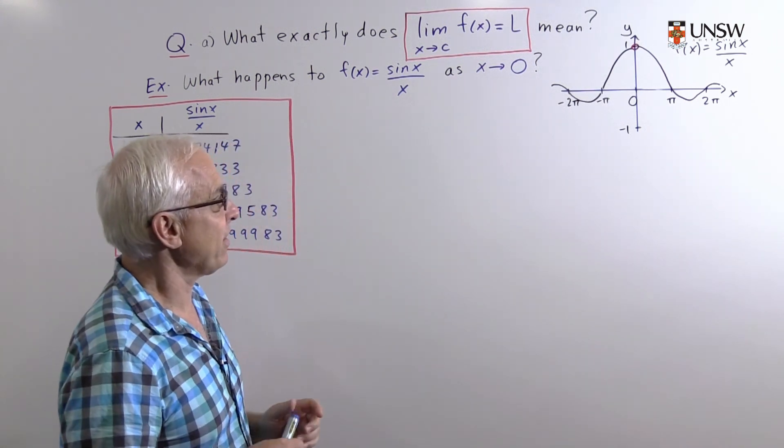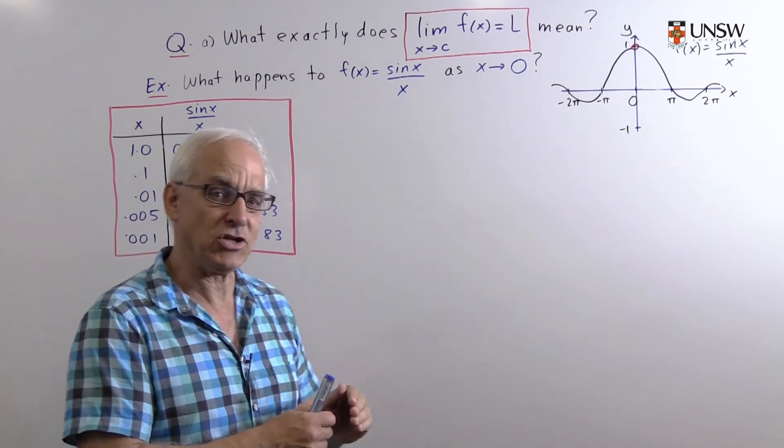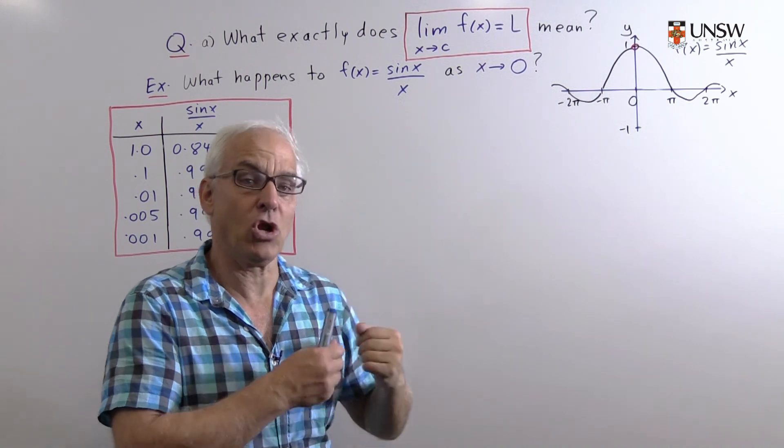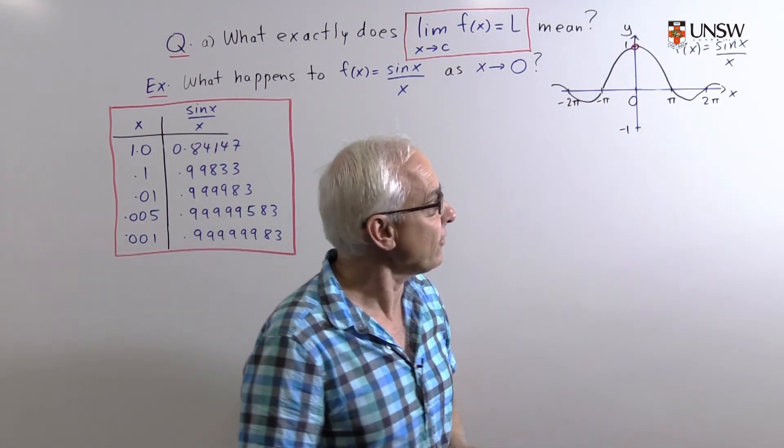There's a question mark about what the actual value is, but nevertheless we can graph the function for x values close to zero and we get something that looks like this.